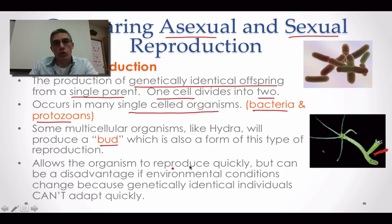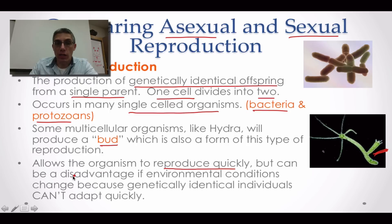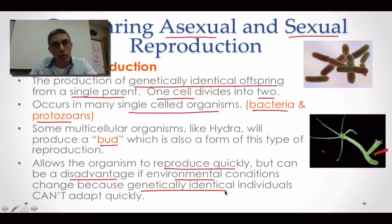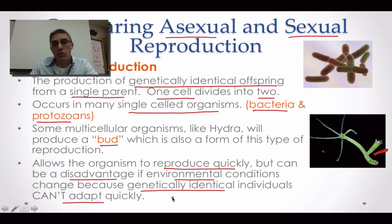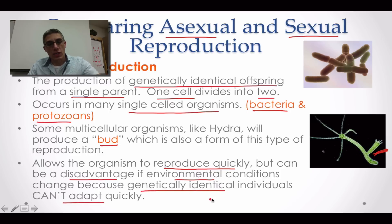This is going to allow the organism to reproduce super quickly, so that's one advantage to this type of reproduction. However, there can be a disadvantage: if environmental conditions should happen to change, because all members of the population are genetically identical, there's not a lot of variation. The population can't adapt quickly enough, which can be pretty detrimental. But if you need to reproduce quickly, asexual reproduction is beneficial.